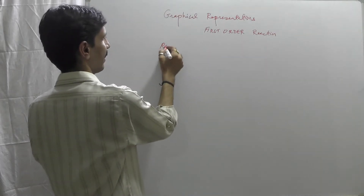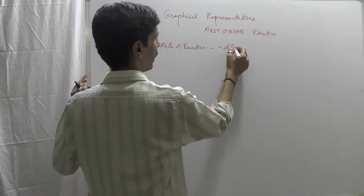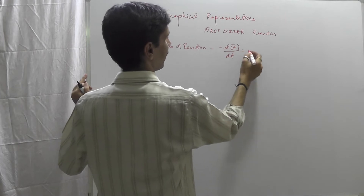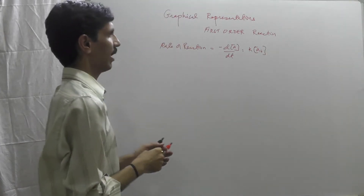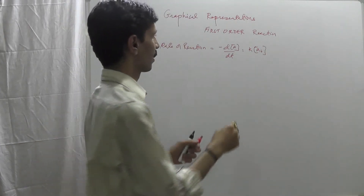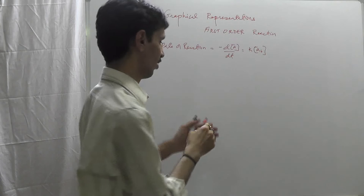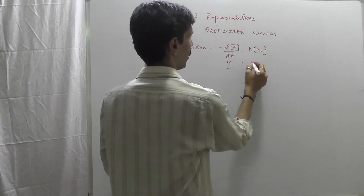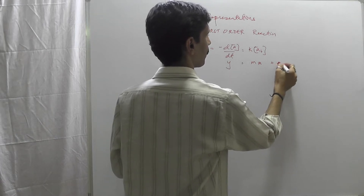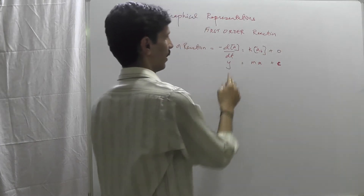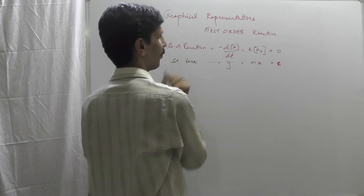To begin with, if you remember, we said that the rate of a reaction is given as minus dA upon dt, and that is equal to K into the concentration of A at time t. So now what we need to do is, in this case the equation can be given in the form of Y is equal to MX plus C. This is the equation of a straight line.